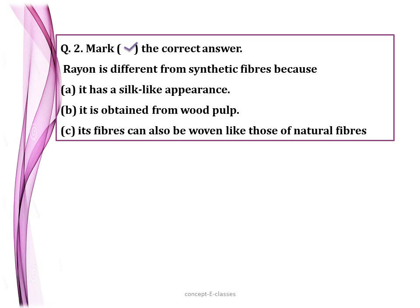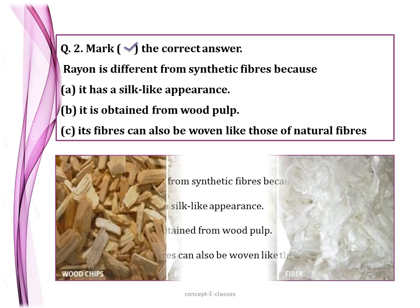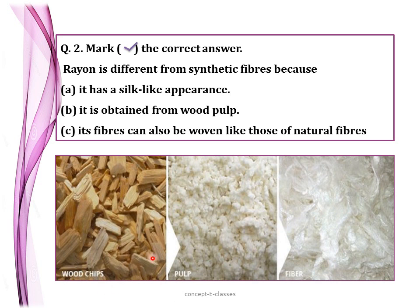Second question: mark the correct answer — rayon is different from synthetic fibers because (a) it has a silk-like appearance — no, other synthetic fibers also give a shiny appearance like polyester; (b) it is obtained from wood pulp; or (c) its fibers can be woven like natural fibers — no, other synthetic fibers like polyester can also be woven. The correct answer is (b): rayon is obtained from wood pulp, making it the only synthetic fiber from a natural source, which is why it is also called a semi-synthetic fiber. It is obtained from wood chips, which are converted to wood pulp by chemical processing, and then fibers are created.